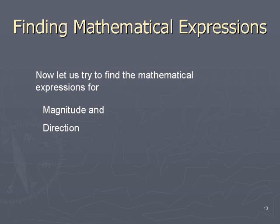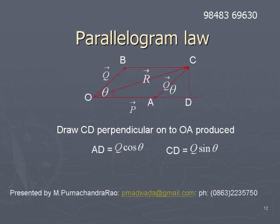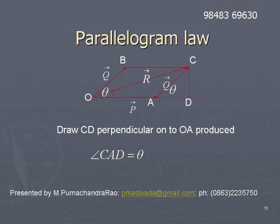Now let us try to find the mathematical expressions for magnitude and direction. For this purpose, let us draw CD perpendicular onto OA produced. Then angle CAD becomes equal to theta, where theta is the angle between OA and OB — that is, the angle between the two vectors p-bar and q-bar. Angle CAD will also be equal to theta, and AC will be equal in magnitude and direction to q-bar. Hence, AC is q-bar.